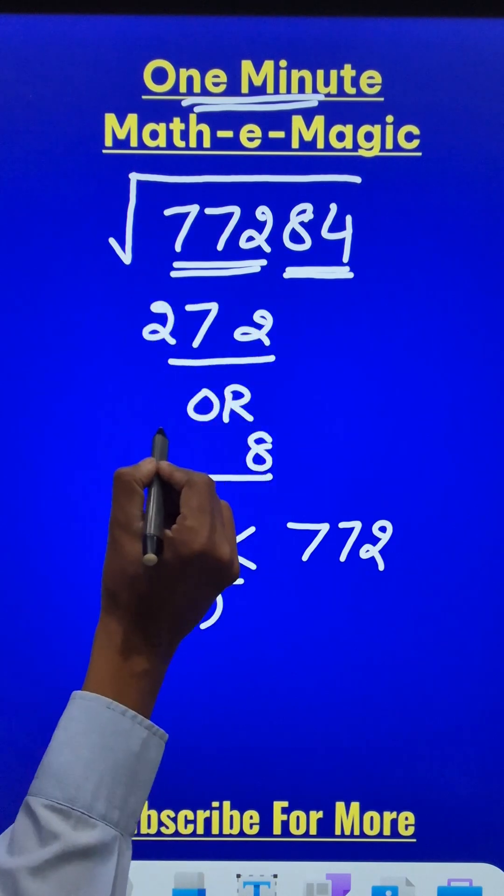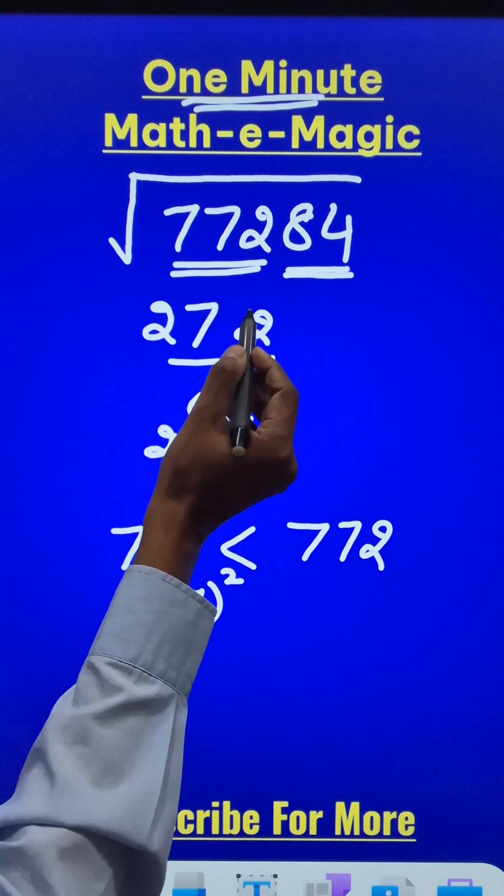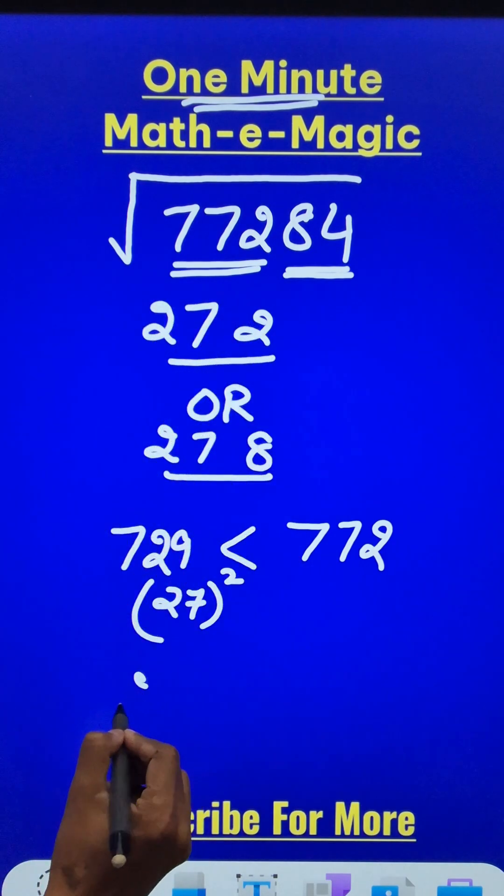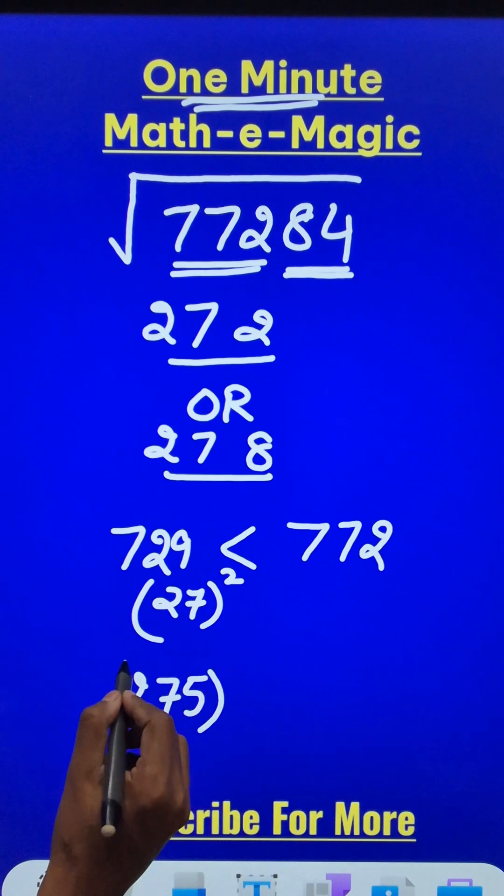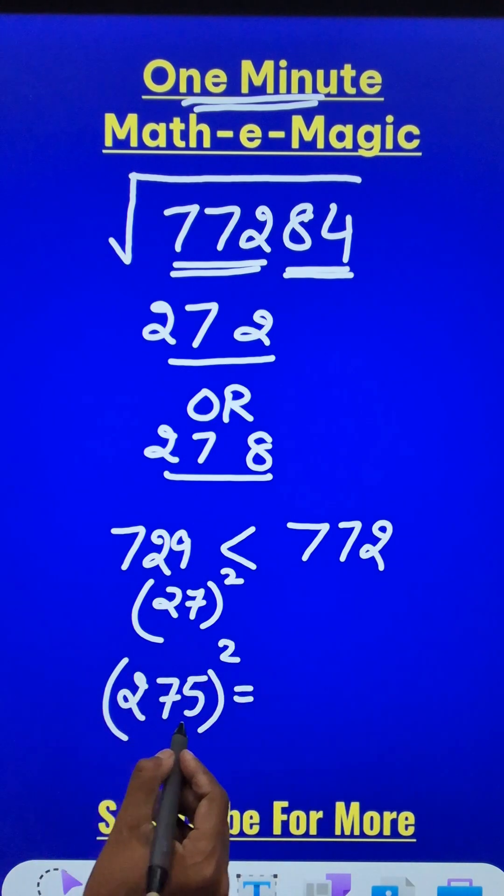So 27 forms the remaining part of my answer and now between 272 and 278, I have 275. So I will be finding the square of 275 first using the Vedic math.